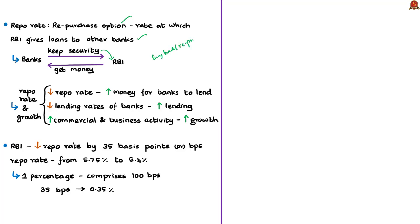A reduced Repo Rate means banks get money at a lesser interest rate from the RBI, increasing the amount of money with commercial banks. The commercial banks can then use this money for lending activities, lending to borrowers such as business houses or entities. The banks will also reduce their lending rates, resulting in more people and businesses taking loans. This increases the money supply and business activity in the economy, ultimately boosting economic growth. These are the benefits of reducing the Repo Rate.